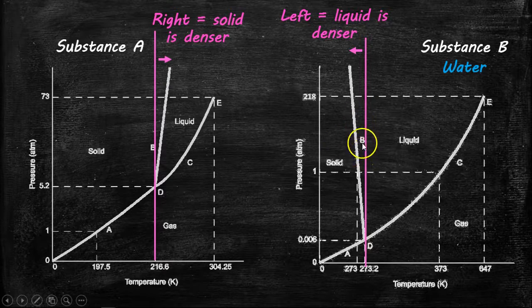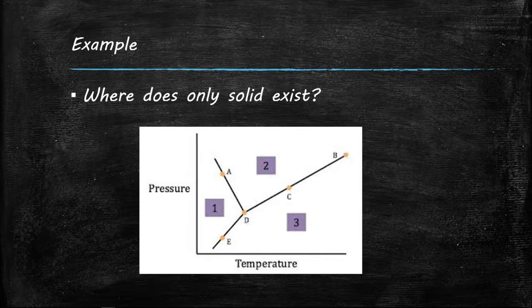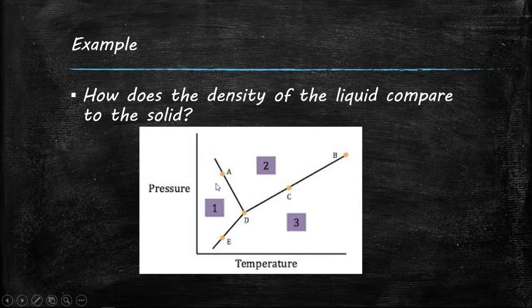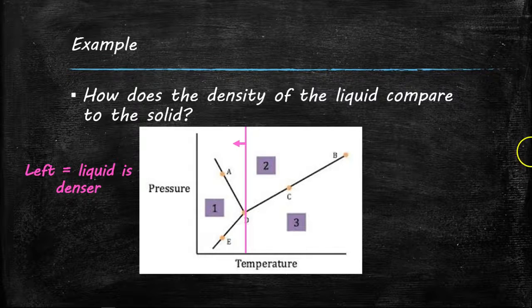Review questions: the triple point is D; solid exists only in that enclosed region (not on the line); and using the vertical line from the triple point, if the solid-liquid curve moves to the left, the liquid is denser. Hope you got something out of these notes — I'll see you when we get to class.